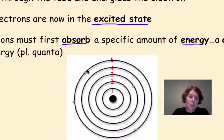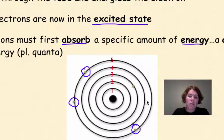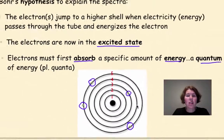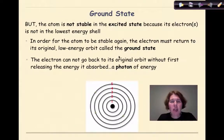All of these electrons that you see right here are said to be in the excited state. They've jumped from a lower energy level, or a lower shell, up to a shell that is farther away from the nucleus, and are now considered unstable.